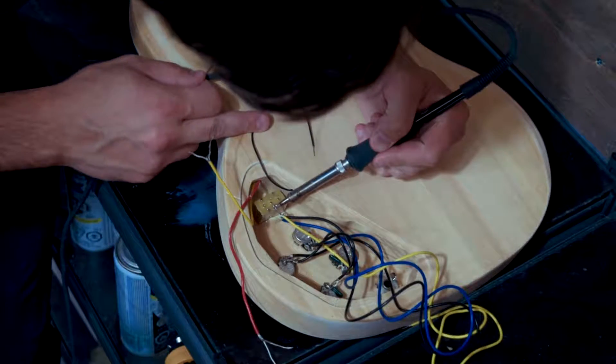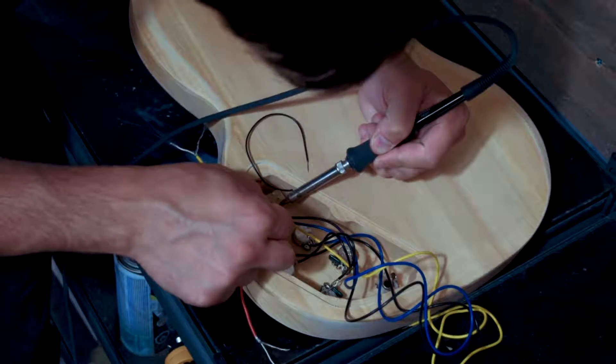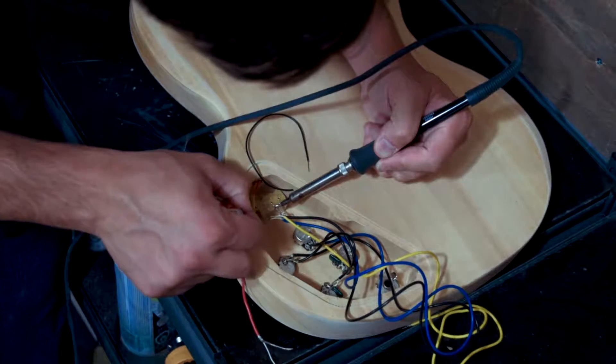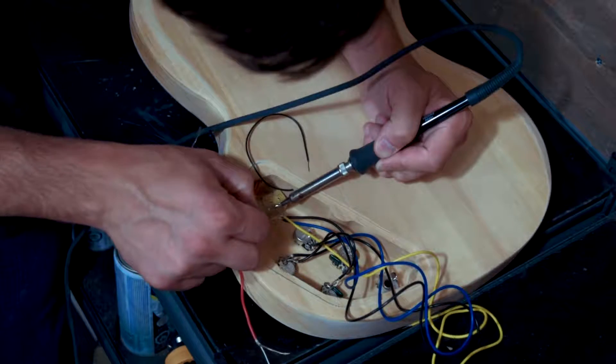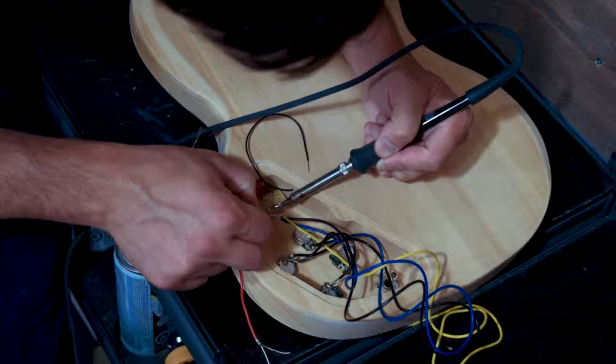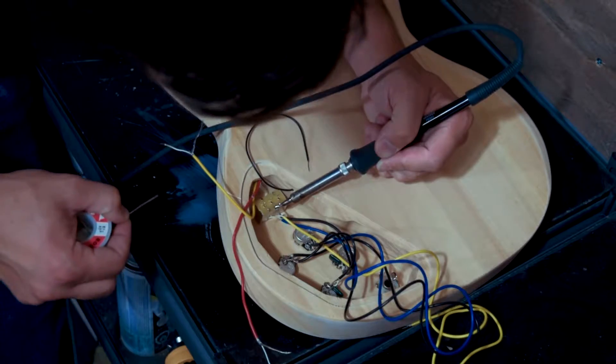I start here by soldering the wires themselves onto the switch. Now the switch will have three lugs and then one lug that's off to the side. The one lug off to the side is the ground. So all of your ground cables for the switching will go to that. Those are coming off of the pots and going to the output jack.